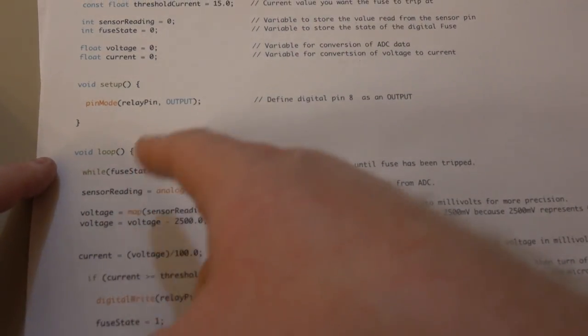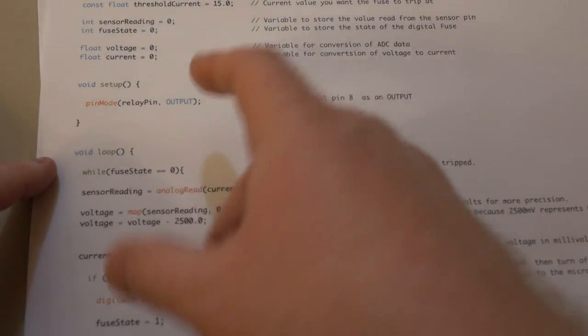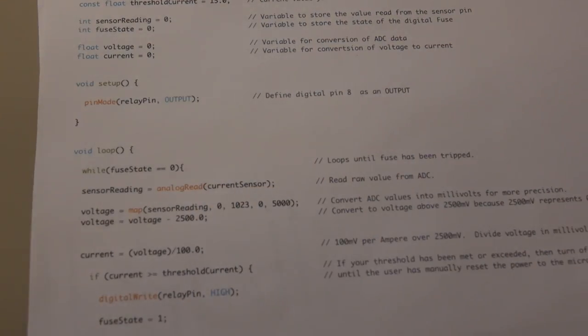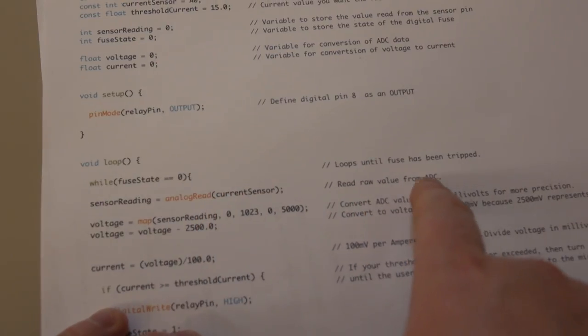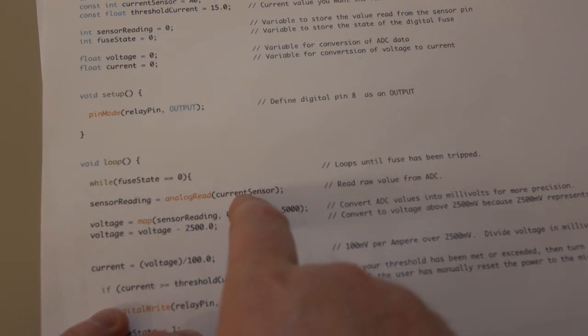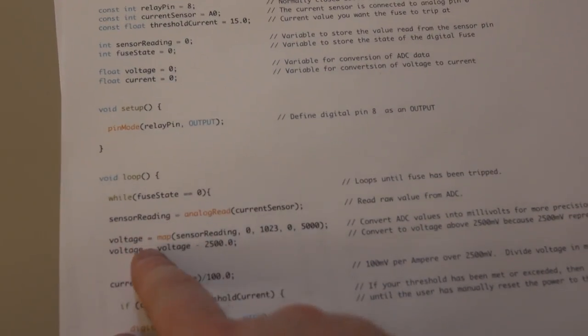The next thing we're going to do is we're going to take the raw data from the analog to digital converter from the current sensor and store it into our variable sensor reading that we defined up here.